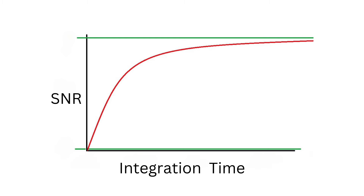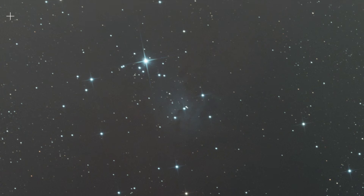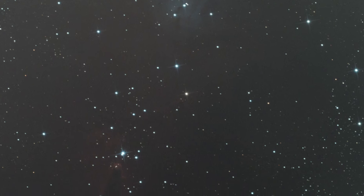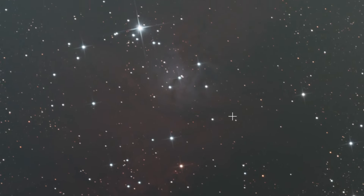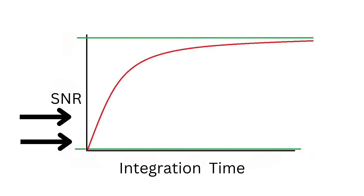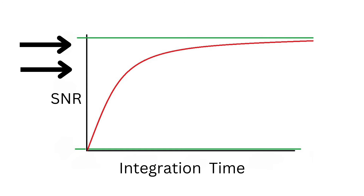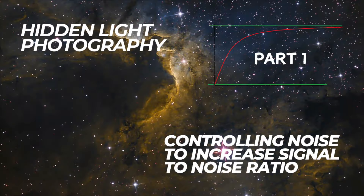But how much integration time is enough? That's where the concept of diminishing returns comes in. In astrophotography, diminishing returns refers to the point at which increasing your integration time yields a progressively smaller improvement to image quality. The first few hours will significantly improve your image, but after that the improvements become less noticeable. For instance, going from one hour to two hours might make a big difference, but going from 10 hours to 11 hours may not be as noticeable. A general rule of thumb is that to get a noticeable improvement, you need to double your integration time.